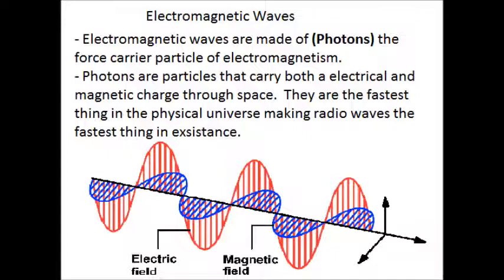Electromagnetic waves are made of photons, the force carrier particle of electromagnetism. The photon is an amazing particle that can carry both electrical and magnetic charge through space. They are the fastest thing in the physical universe making radio waves the fastest thing in existence.